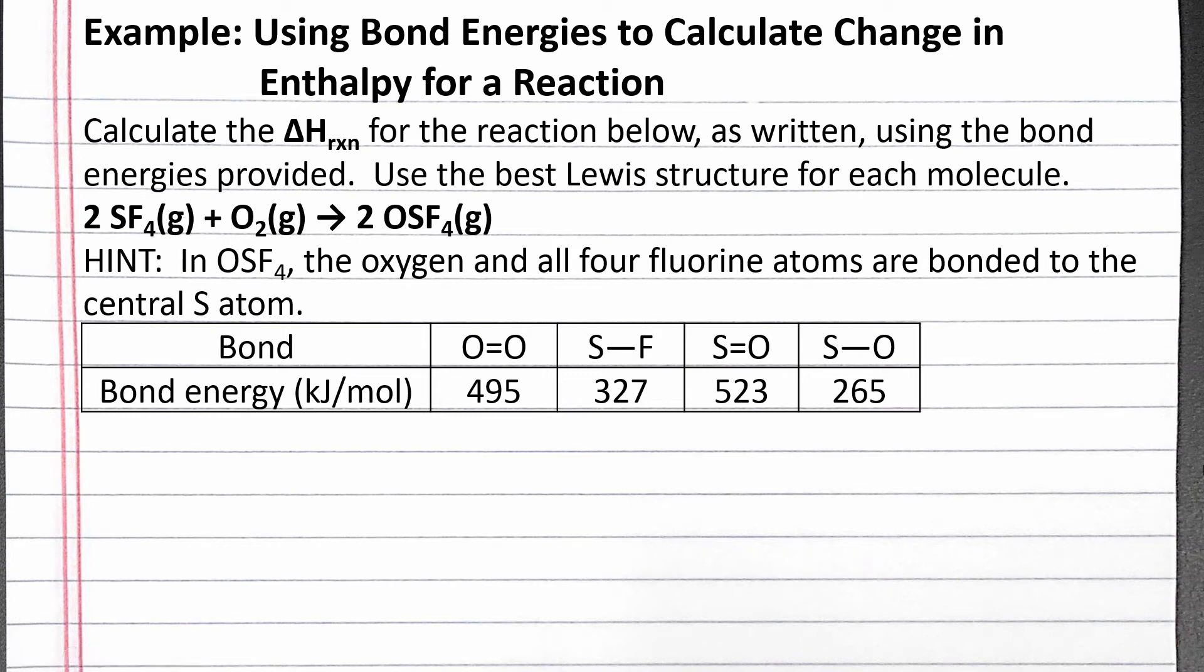In this example, we use bond energies to approximate the change in enthalpy for a reaction. Our problem reads, calculate the change in enthalpy for the reaction below, as written, using the bond energies provided. Use the best Lewis structure for each molecule.